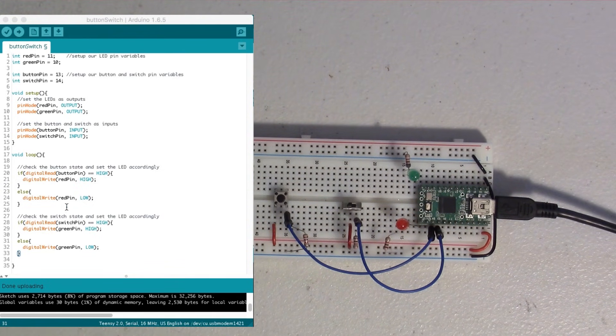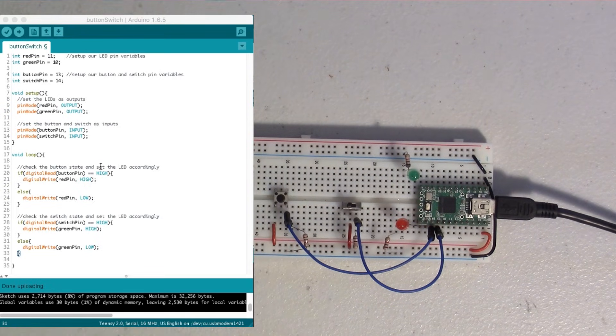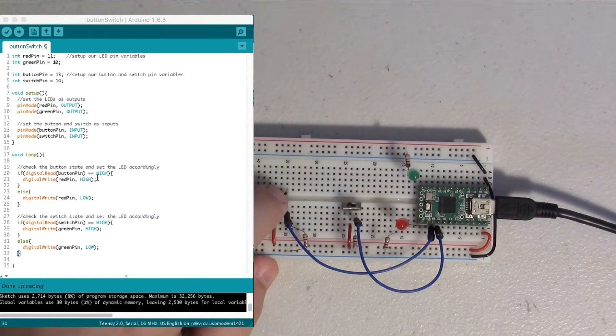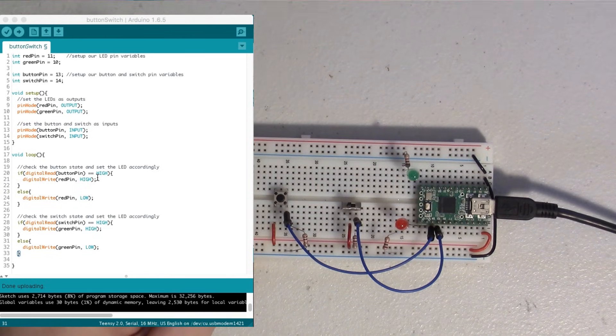So down here in loop, it's really quite simple. We do an if and else statement for each of the button and pin. First thing we do is we say if digitalRead(buttonPin), if that's equal to high—i.e., we're pushing our button here—then our red pin, we're going to turn it high. So you can see the red pin is turning on and off as I push and release the button.